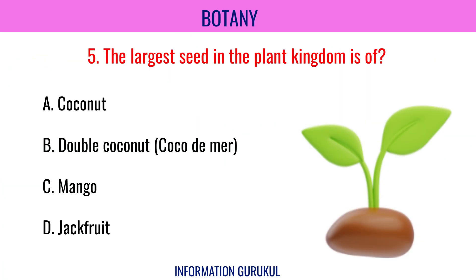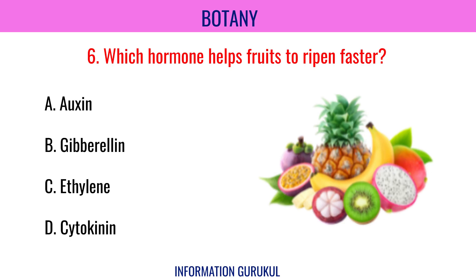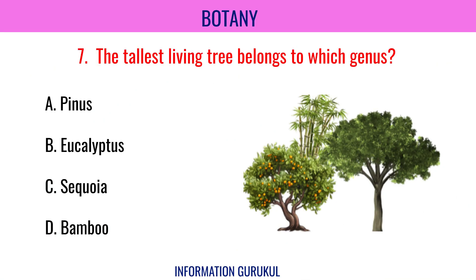The largest seed in the plant kingdom is of double coconut. Which hormone helps fruits to ripen faster? Ethylene. The tallest living tree belongs to which genus? Sequoia.